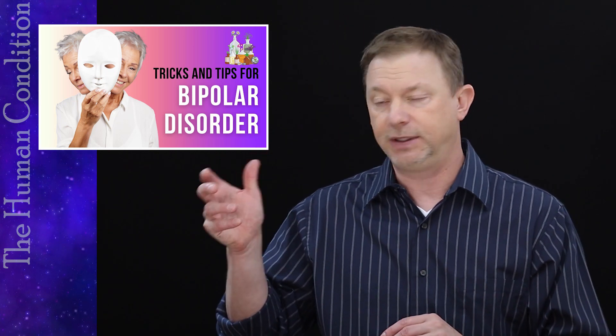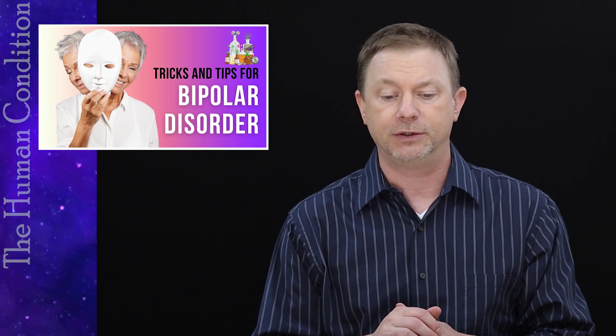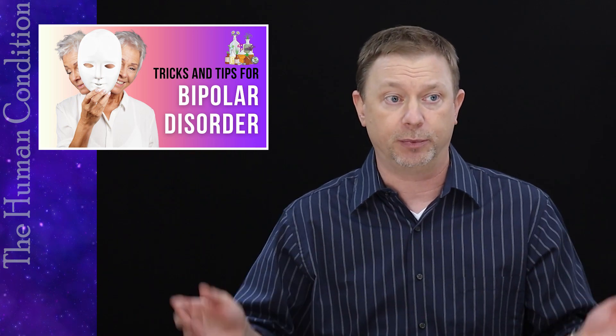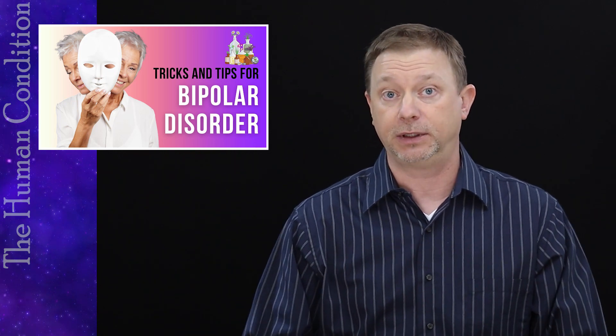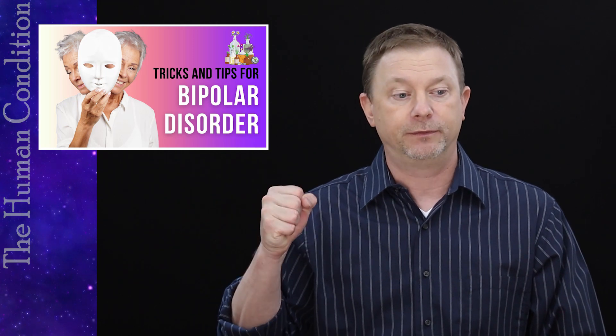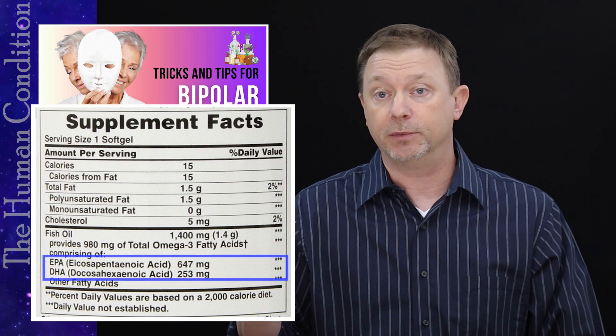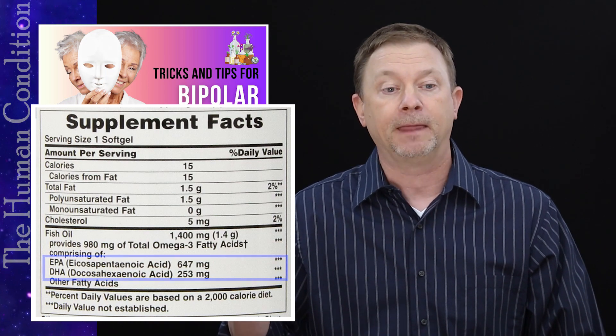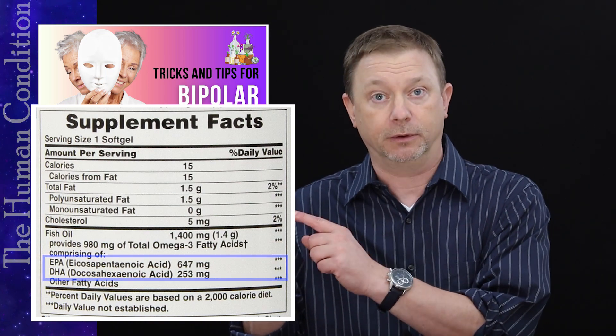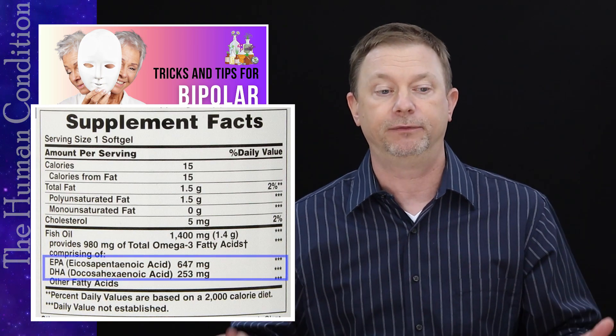So you want to look for labels that actually have the amount listed on the label of EPA and DHA. You don't want to just take omega-3 1500 milligrams for example and ignore how much is actually preformed EPA and DHA. You want to get, in most of my cases with my patients, I'm looking for three to five hundred milligrams of EPA and/or DHA in one capsule so that they're not taking big bulky lots of big bulky fish oil capsules all day long. Although you have to sometimes and it really does work.